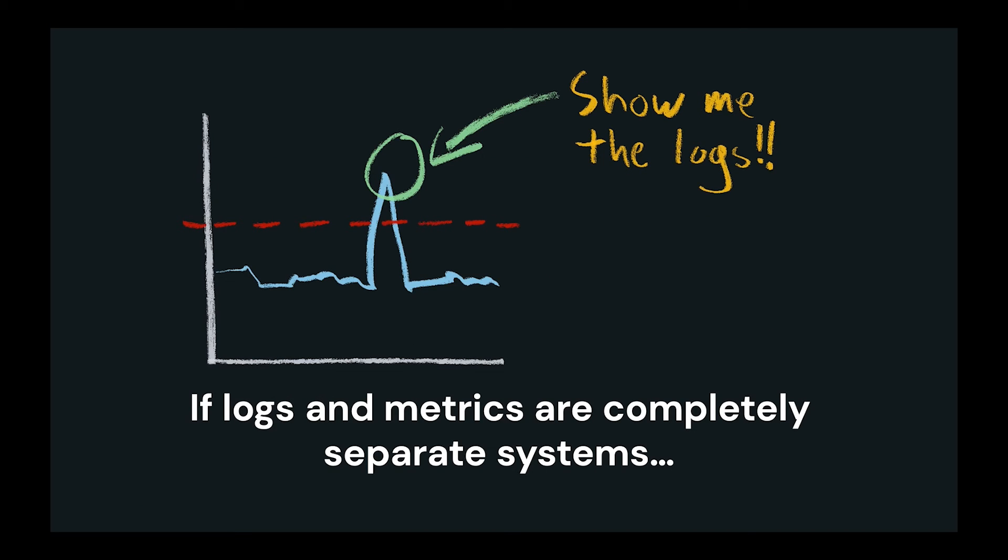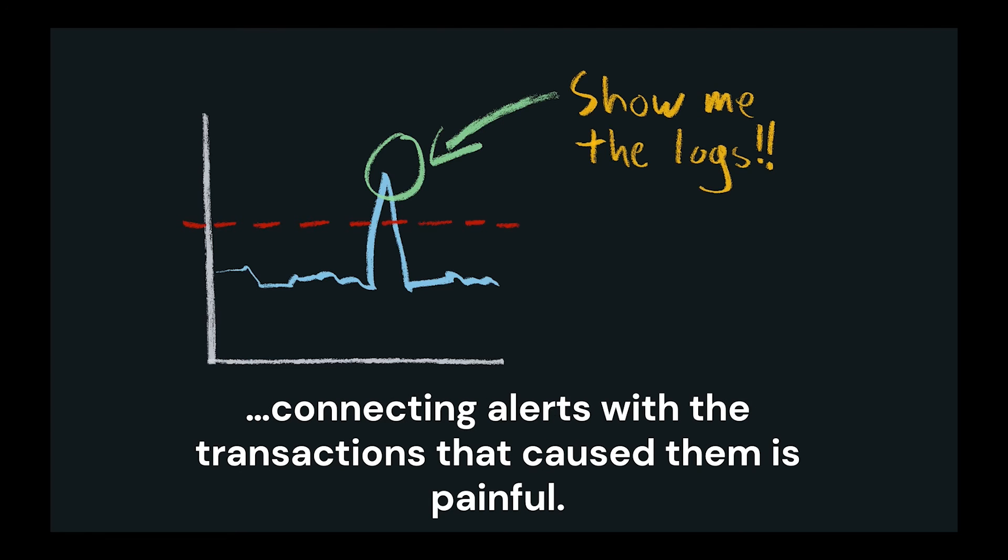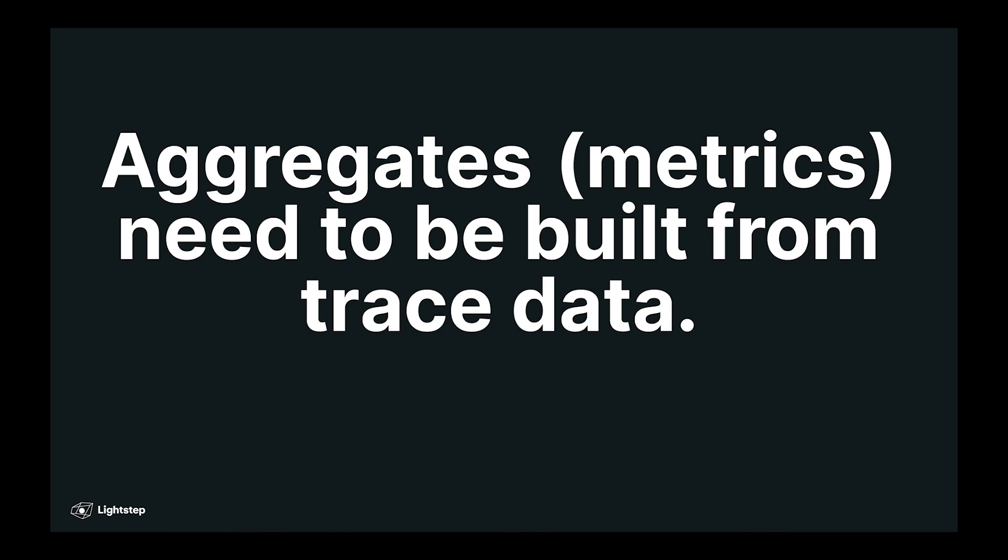In other words, when you're looking at a metric and that metric has set off an alert, the next thing you want to look at is the transaction. You're going to want to see the actual events that generated that particular metric. And if your logs and your metrics are in completely separate systems, then connecting these alerts with the transactions that caused them and finding the root cause is going to be very painful.